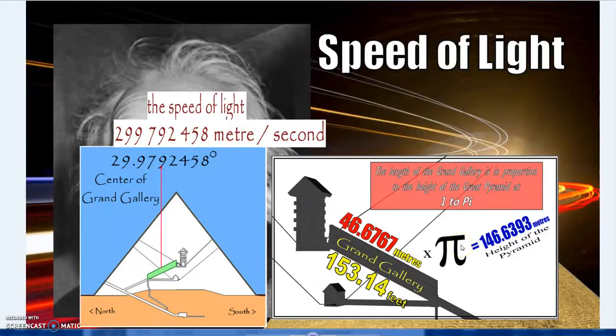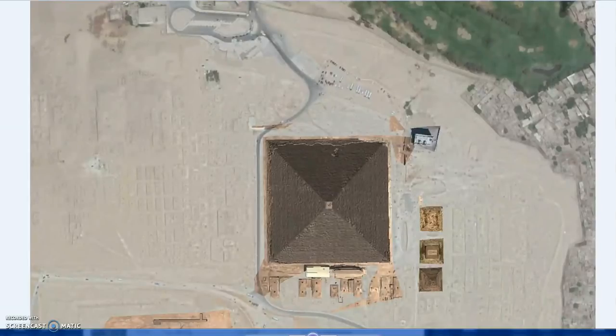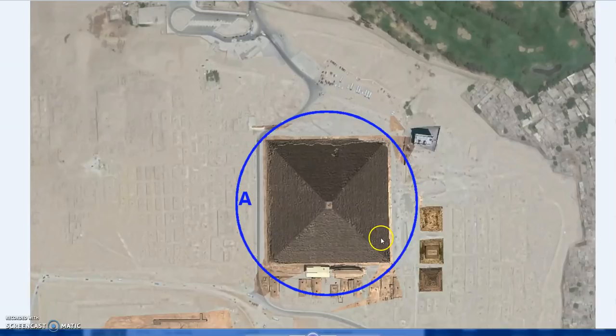Now that could be sheer coincidence. Okay, so Pi is one of these universal important constants, and it just so happens that the Grand Gallery times Pi is the height of the Great Pyramid, and there's so much stuff going on there.